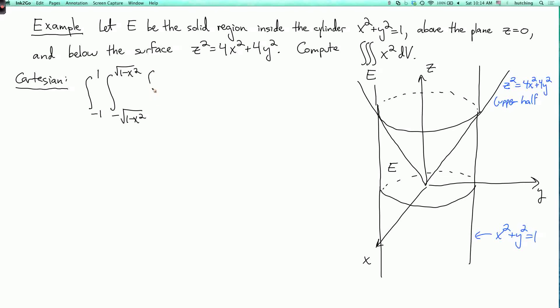And then for a given x and y, z always starts at 0, and the highest z gets is given by z on this cone, so that would be the square root of 4x-squared plus 4y-squared. And then x-squared dz dy dx.